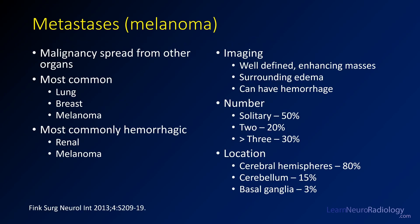This is a case of intracranial metastatic disease — in this case, from melanoma. This is when malignancy spreads from other organs into the brain. The most common ones you're going to see are lung, breast, and melanoma, simply because they're the most common. The most common hemorrhagic mets are renal or melanoma because they're highly vascular and more likely to hemorrhage.